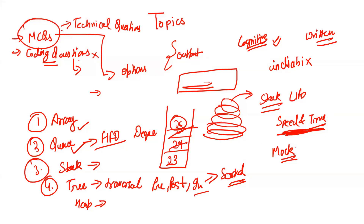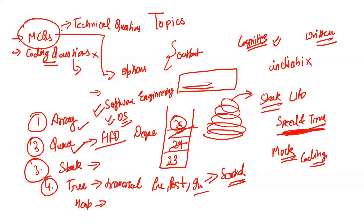Software Engineering is also a topic they have started asking questions on. Your core Computer Science subjects are important — Software Engineering models are very, very important in this section. Operating System questions are also asked, and they can include topics like ACID properties for transactions. You must have a basic understanding of these Computer Science related subjects, as TCS has started including questions from these areas as well.